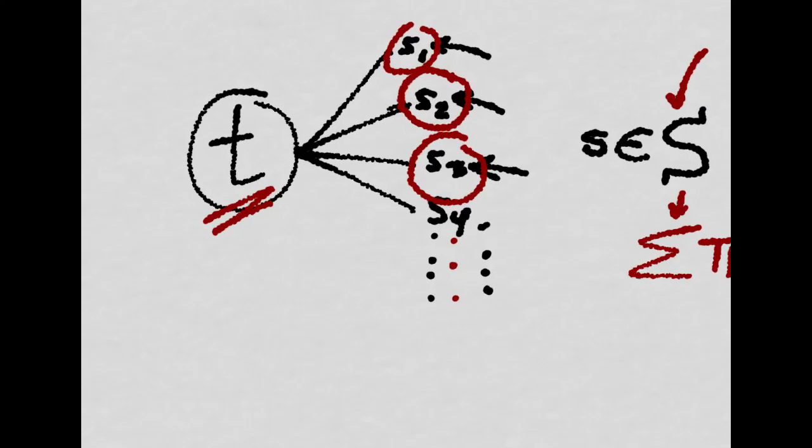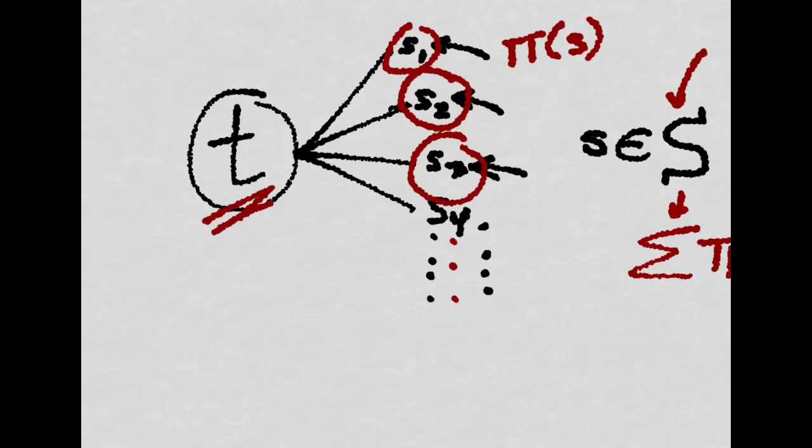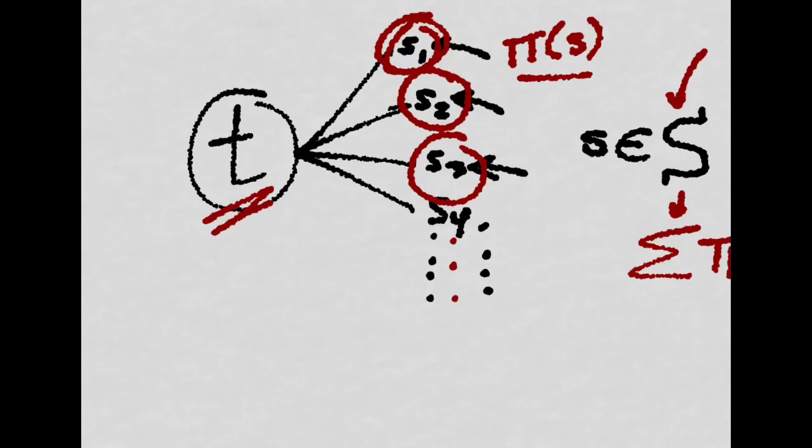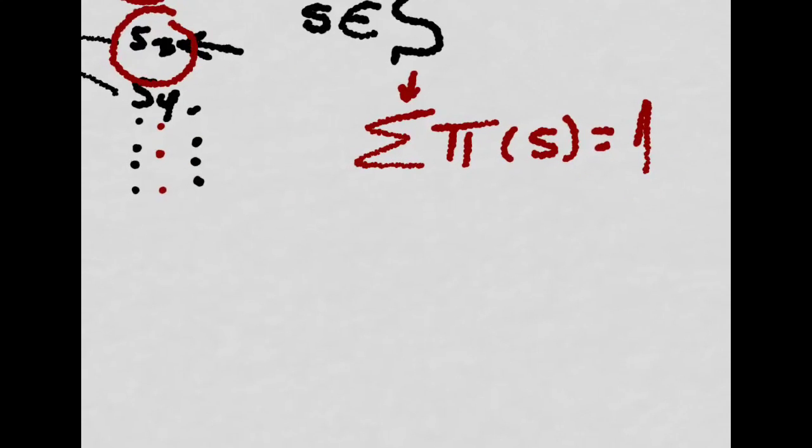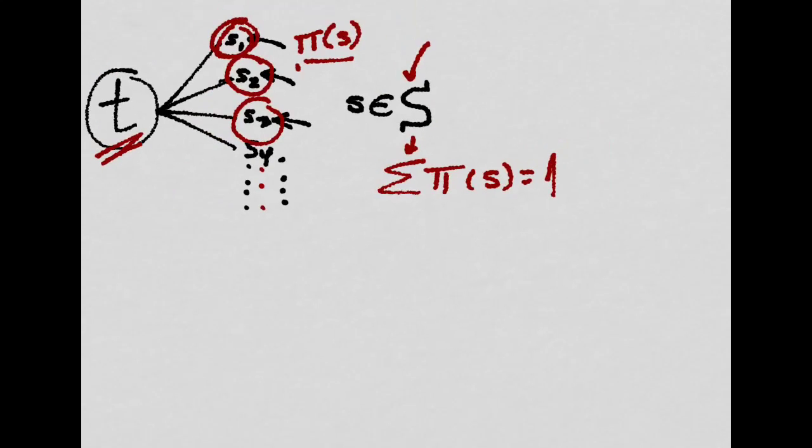Let's denote by π(s) the probability that a specific state S could happen, given that the sum of all the probabilities for each of the states of the world have to equal to 1.